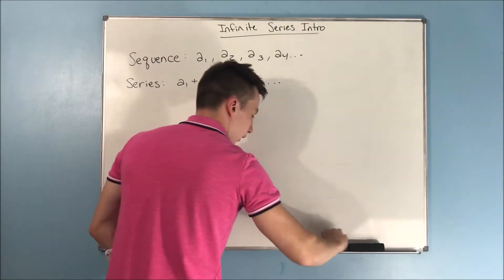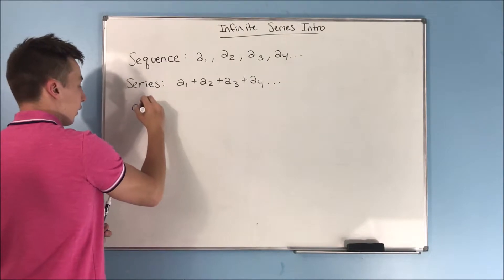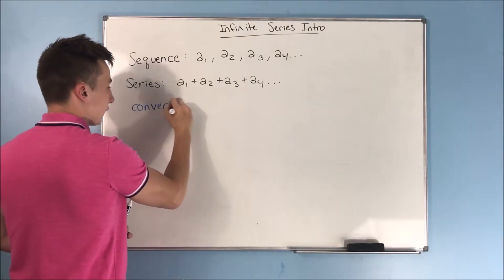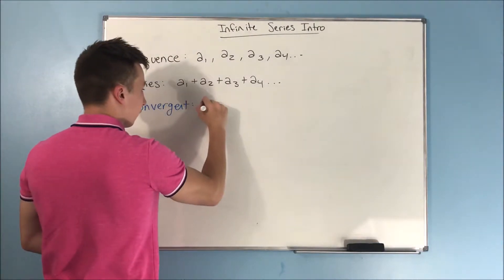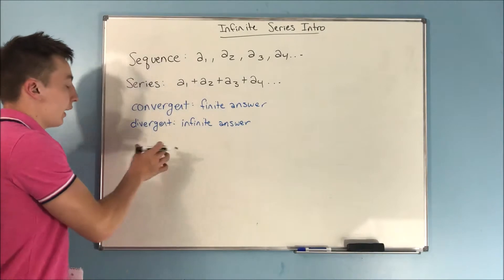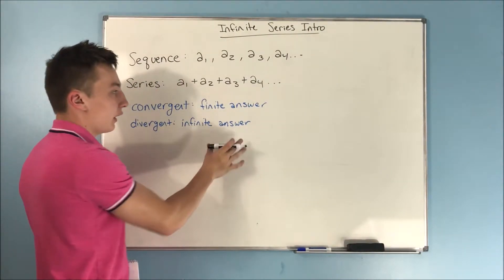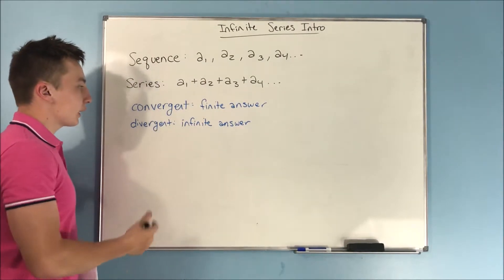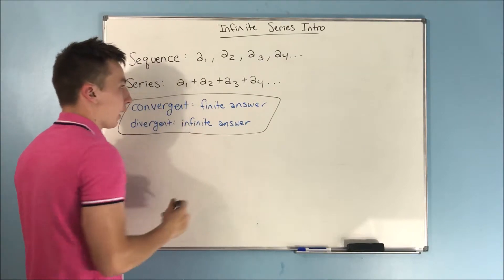I'll just kind of rush our way through these definitions here because we've already learned these, but just to reinstate this, to be convergent is to have a finite answer. And for a series or integral to be divergent means it has an infinite answer. So that's what we mean when we say those terms right there.